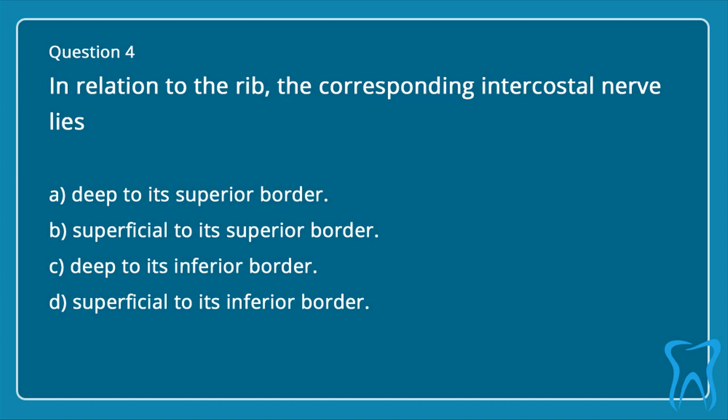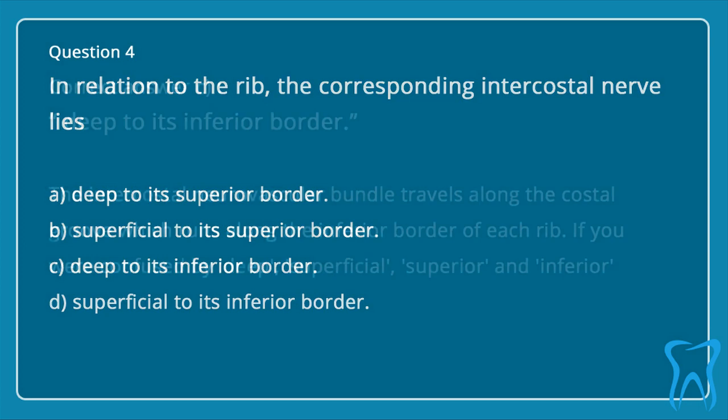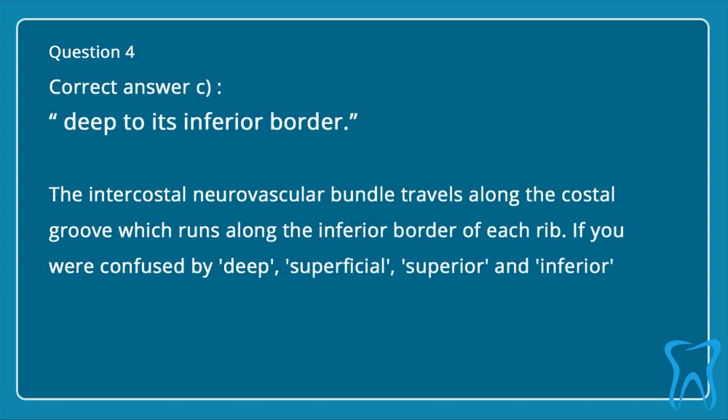Question 4: In relation to the rib, the corresponding intercostal nerve lies: a. Deep to its superior border. b. Superficial to its superior border. c. Deep to its inferior border. d. Superficial to its inferior border. Correct answer is c. Deep to its inferior border.